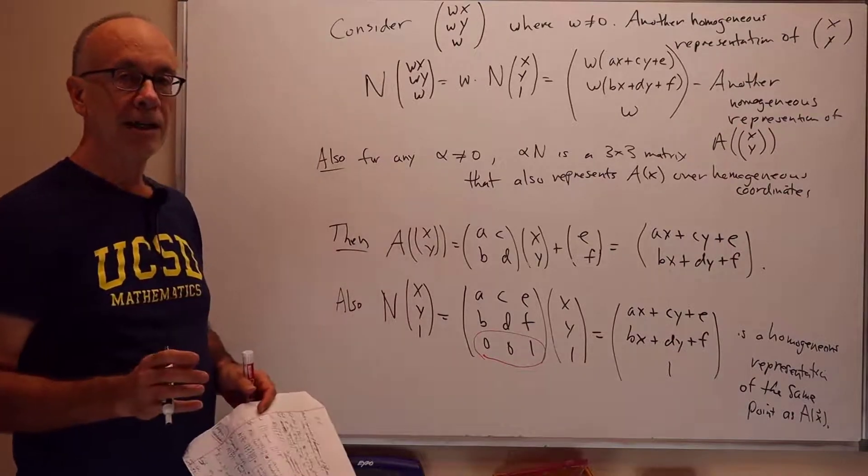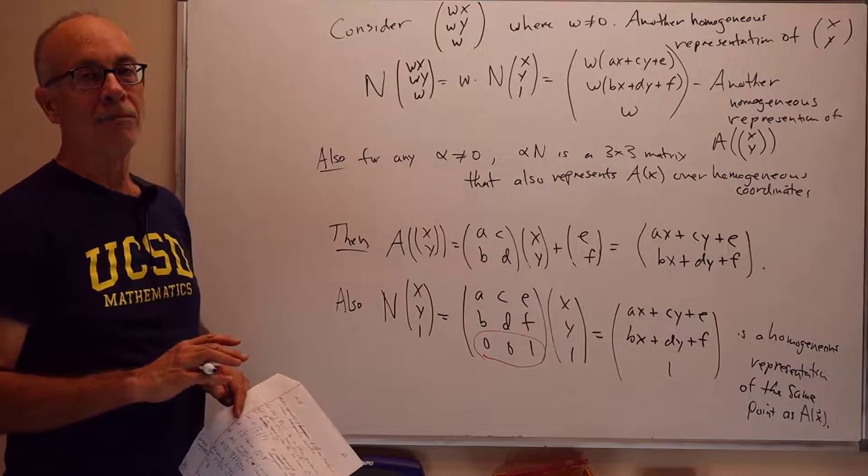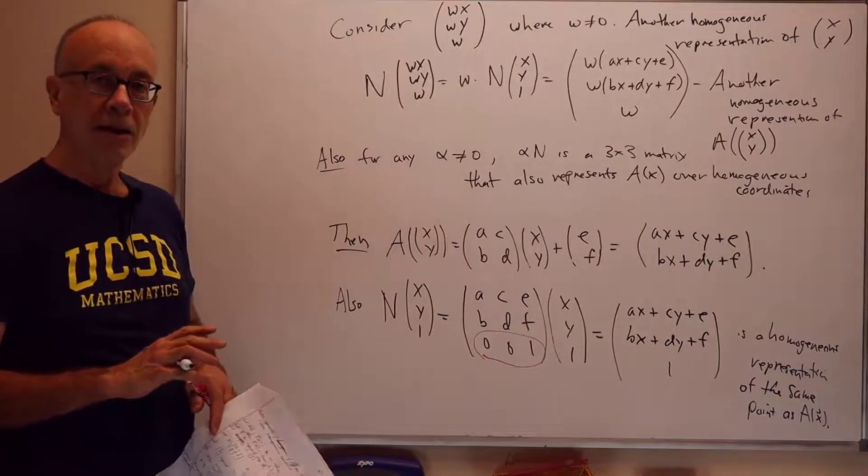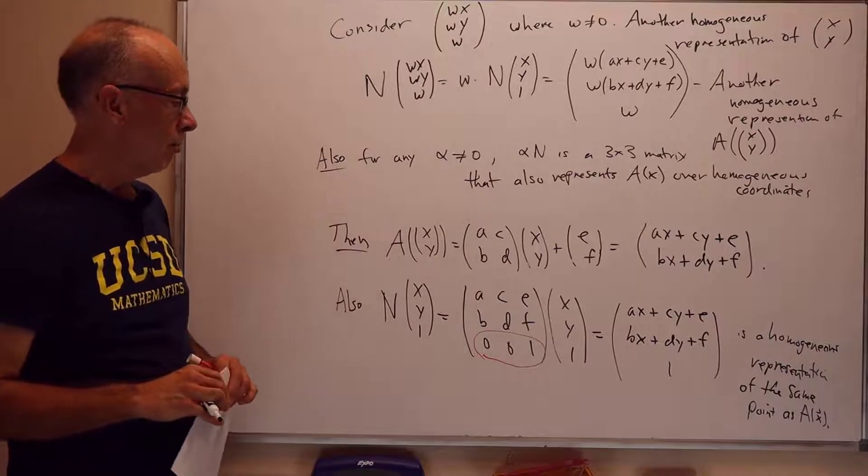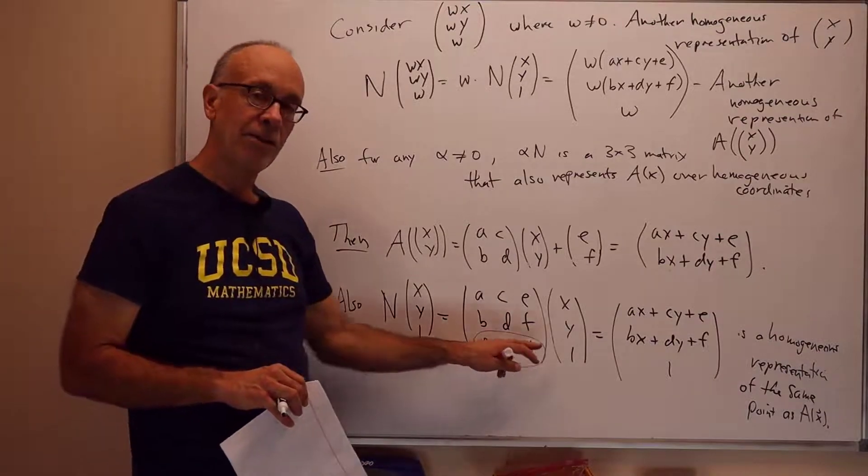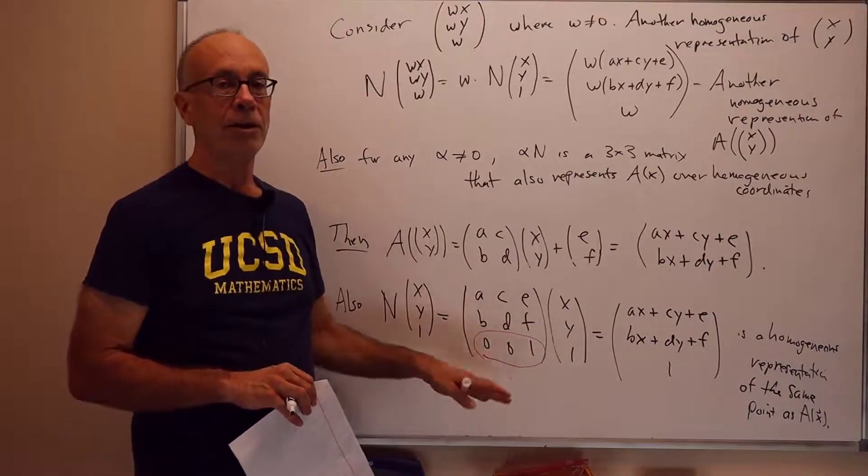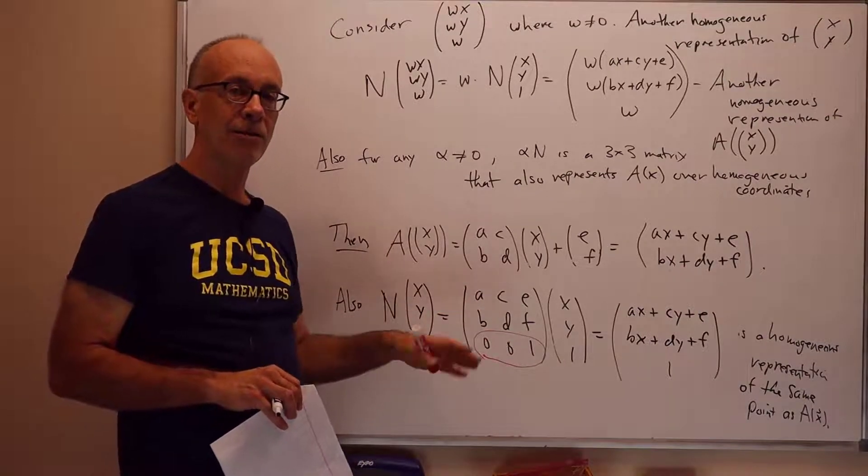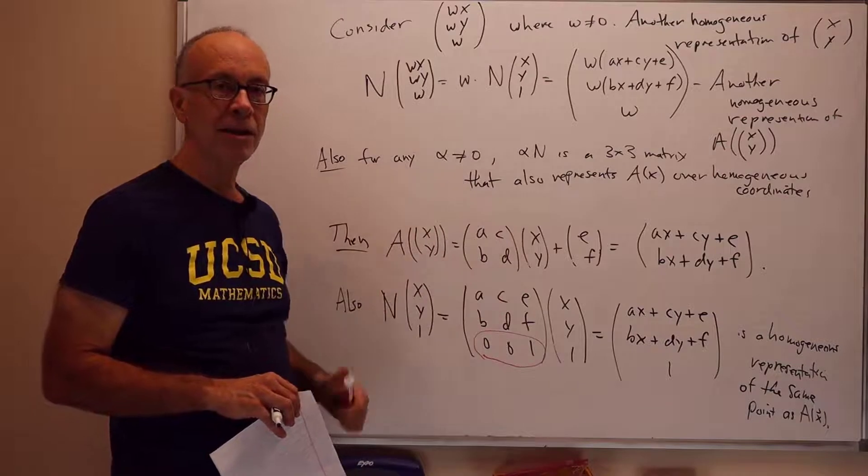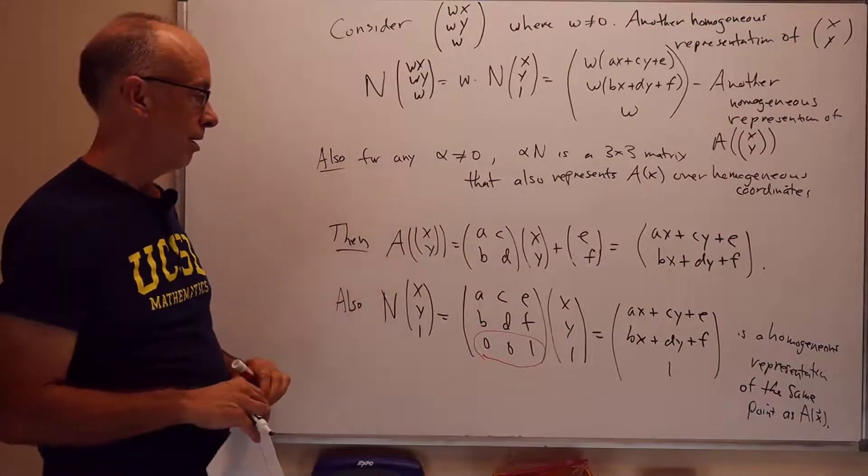Later on, when we get to perspective transformations, we'll use the bottom row of this matrix as well to do useful things with perspective and depth. But for the moment, we'll mostly be using matrices in R2 where the bottom row is 0, 0, 1. When we get to R3 for affine transformations, it'll be 0, 0, 0, 1. But that's a topic for another lecture.